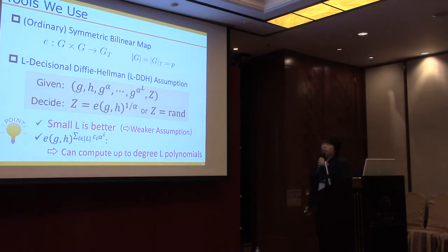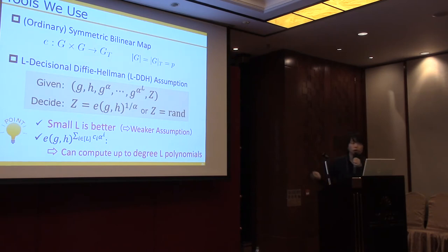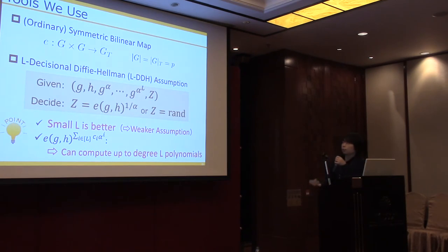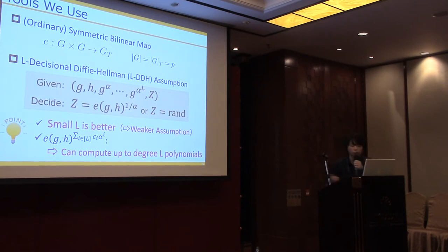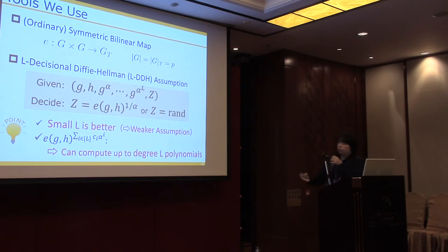For the tools we will use: ordinary symmetric bilinear maps and the L-Decisional Diffie-Hellman (L-DDH) assumption. We are given a tuple and must decide if Z is in the correct format or a completely random element in the target group. Since this is a non-static assumption, we want L as small as possible because that means a weaker assumption. Using this tuple, we can compute up to a degree-L polynomial, so we want that polynomial to be of the lowest degree possible.